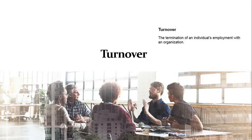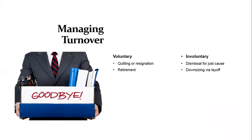Now I'm going to talk about managing turnover, which is of two kinds: voluntary turnover and involuntary turnover. Voluntary turnover is when the employee himself wants to leave the organization, and involuntary turnover is when the employee doesn't want to leave but under some unavoidable circumstances is made to do so. Voluntary turnover can include quitting, resignation, retirement, or personal causes, while involuntary turnover may include downsizing via layoffs, or if the person dies or has mental or health disabilities.